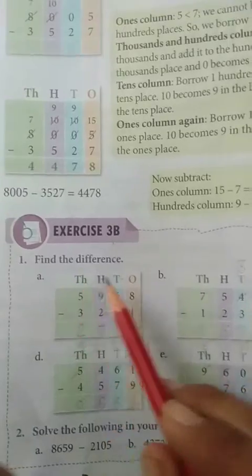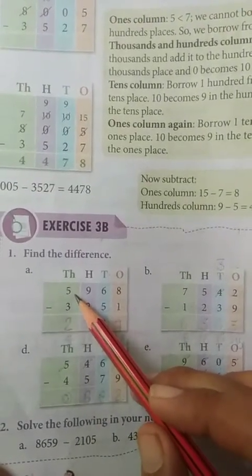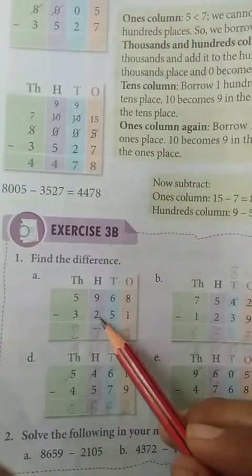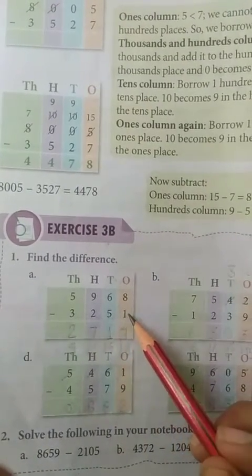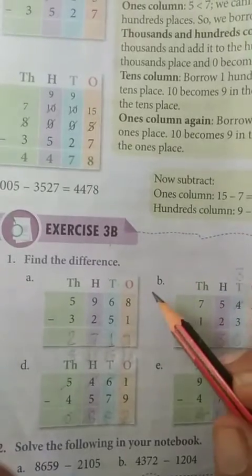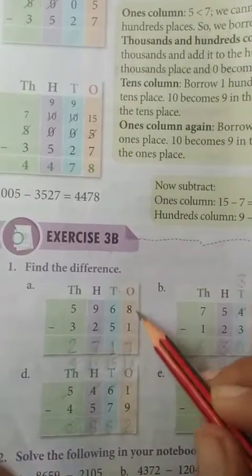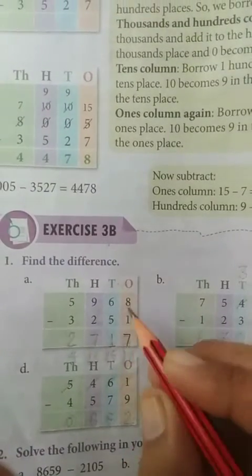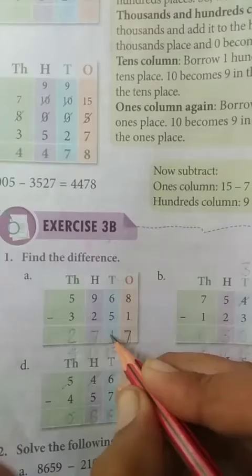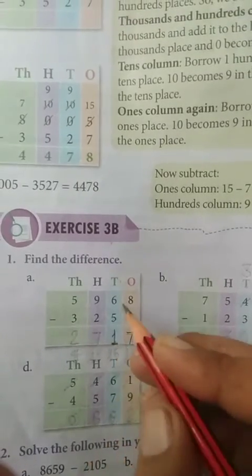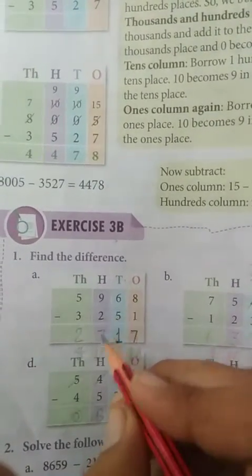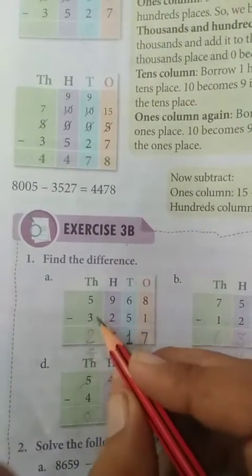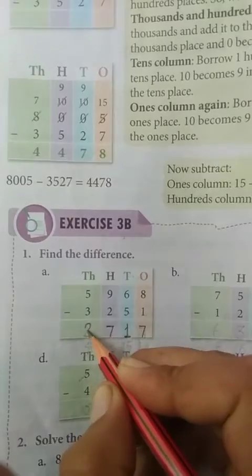Find the difference. First question, 5968 minus 3251. So start from 1's place. 8 minus 1 is equal to 7. 6 minus 5 is equal to 1. 9 minus 2 is equal to 7. 5 minus 3 is equal to 2.